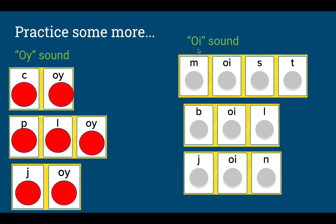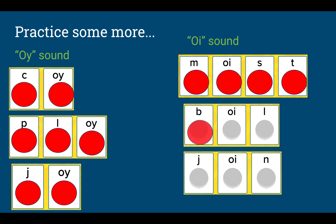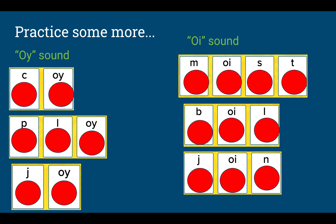Now let's practice the oi sound using the pattern O-I. M-O-I-S-T, moist. B-O-I-L, boil. J-O-I-N, join.